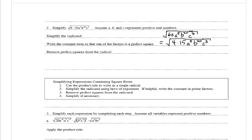Now we remove perfect squares from the radical. The square root of 4 is 2. 15 is not a perfect square and stays inside the radical. For a to the 5th: 5 divided by 2 gives quotient 2, so a squared comes out, and the remainder of 1 means one factor of a stays inside. For b to the 20th: 20 divided by 2 is 10, so b to the 10th comes out with no remainder. For c cubed: 3 divided by 2 is 1 remainder 1, so c comes out and one factor of c stays inside. Everything left inside the radical is 15, one factor of a, and one factor of c.